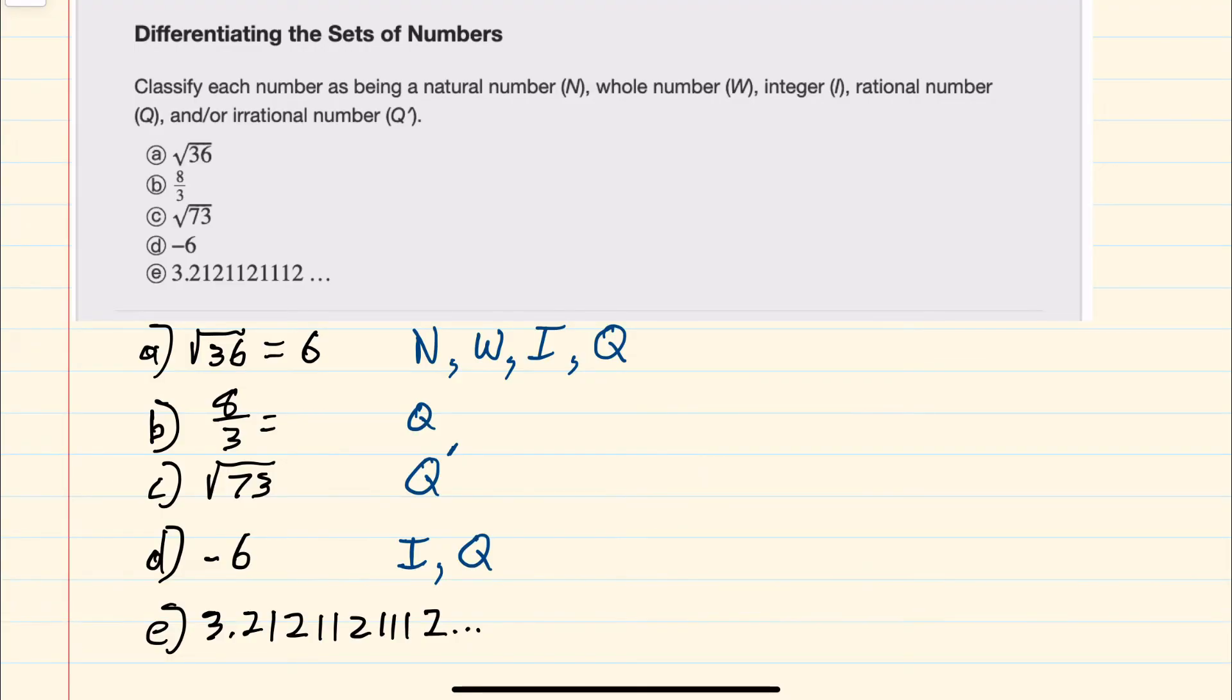E is a decimal number, so it's not going to be natural, whole, or an integer. And to determine whether it's rational or irrational, I need to determine whether the decimal terminates or repeats. It doesn't terminate, so the question is, does it repeat? I can see a two one. However, the next one has a two, one, one, and then a two, one, one, one. So this does not repeat. This will be irrational, or Q prime.